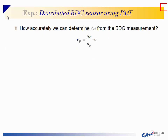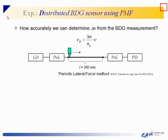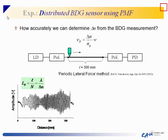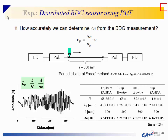The main focus is answering two important questions about BDG-based sensing. First: how accurately can we determine birefringence from BDG measurements? To confirm the basic BDG equation, we measured birefringence using the periodic lateral force method — applying pressure to the PM fiber to induce crosstalk. By moving the pressure point and counting oscillations, we directly measured the beat length of the polarization birefringence for four different fibers.